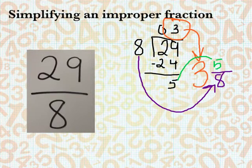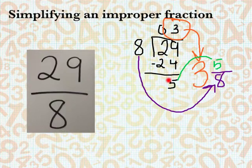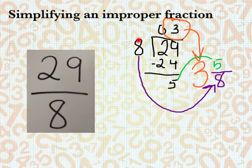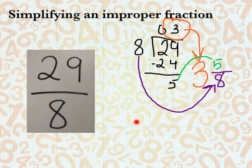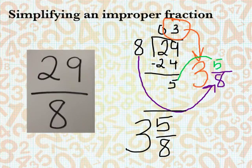8 goes into 29 three whole times and then there will be 5 left over to go up top. But then we're still dividing by 8. So our final answer is 3 and 5 eighths.